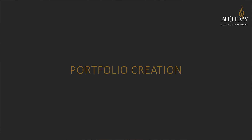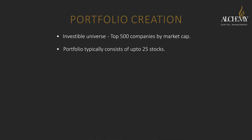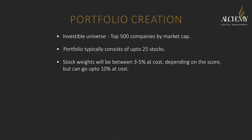Now we come to the portfolio creation part. Our investable universe is the top 500 companies by market cap. We rank the companies and then create a portfolio, which is usually about 20 to 25 stocks. The stock weights will be anywhere between 3 to 5% depending upon the marks the stock has received. But if a candidate is very good and the marks are very high, we go up to 10% at cost. Stock selection is on the basis of the marks attained by the company. There are no sectorial anchors to the benchmark.